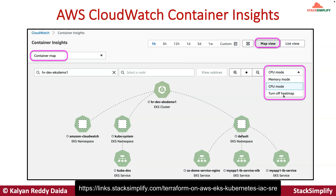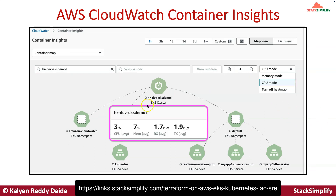When you mouse over respective resources in CPU mode or memory mode, you will find information about that resource. For example, this EKS cluster has an average CPU of 3% and average memory usage of 7%. You can also see network in/out and read/write transactions.